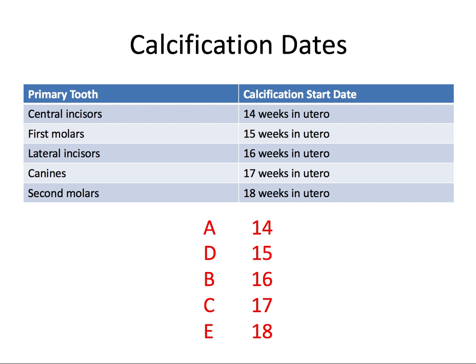If you remember the order A, D, B, C, E, all you have to remember is you start with 14 — that's our lucky number of 14 weeks in utero — and you just add one number down the rows. So going A, D, B, C, E, you start at 14 and add one each row, and that corresponds to the calcification start dates for these primary teeth. Hope you can remember that and that it can help you with these calcification dates.